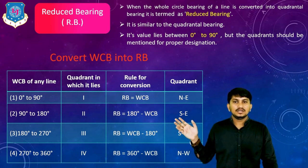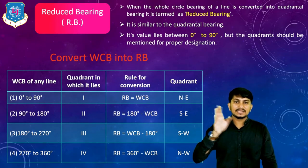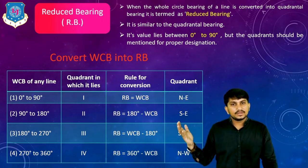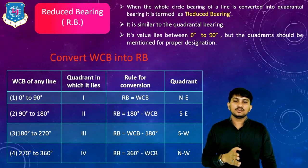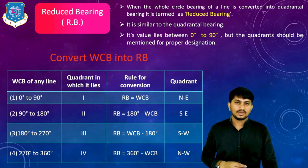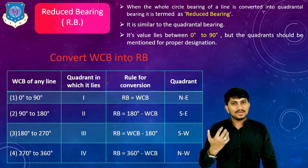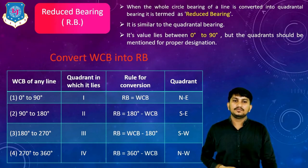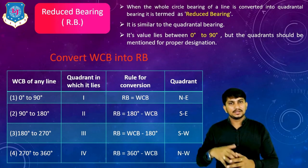For the second quadrant, WCB between 90 to 180 degree: RB equals 180 degree minus WCB, and the quadrant is southeast. For the third quadrant, WCB between 180 to 270 degree: RB equals WCB minus 180 degree, and the line lies in south-west direction. For the fourth quadrant, WCB between 270 to 360 degree: RB equals 360 degree minus WCB, and the line lies on the north-west quadrant. This table is used for converting WCB into RB.